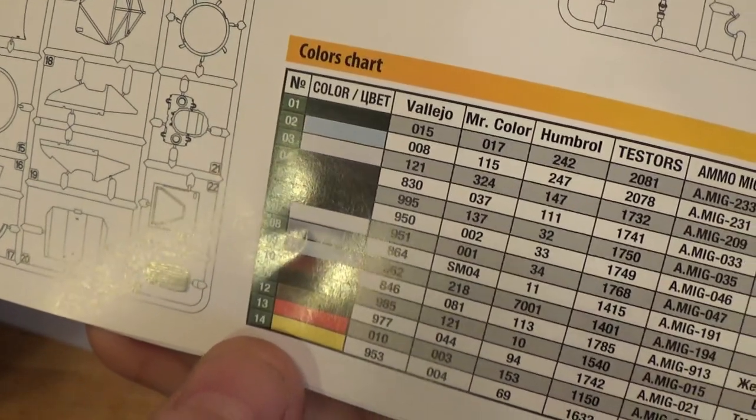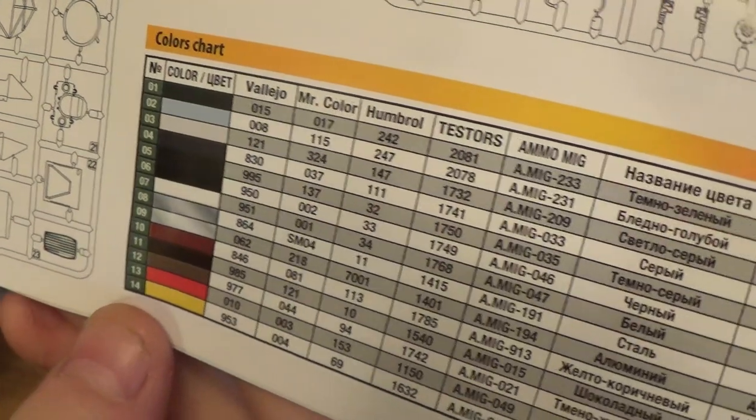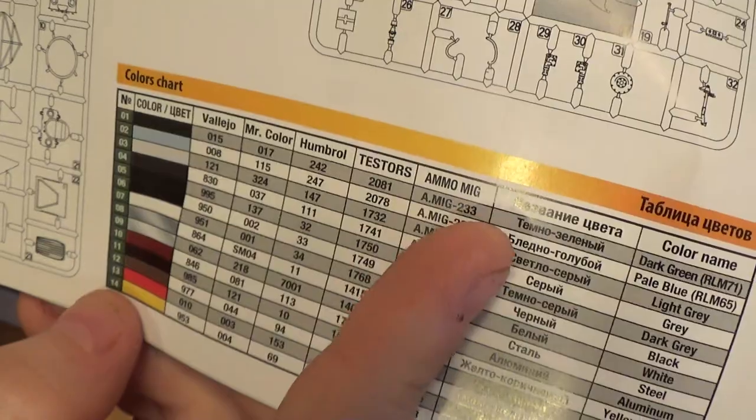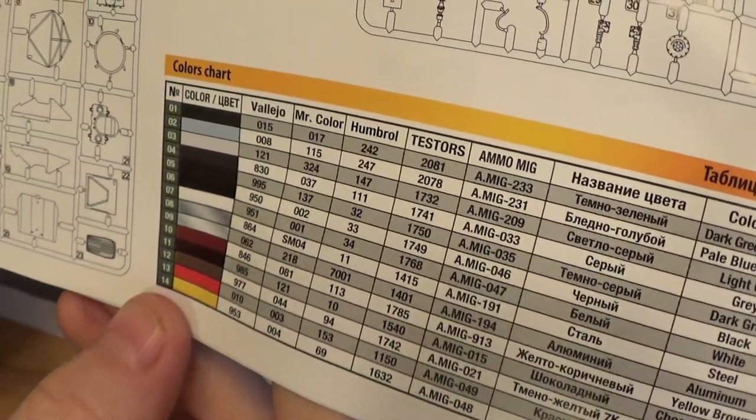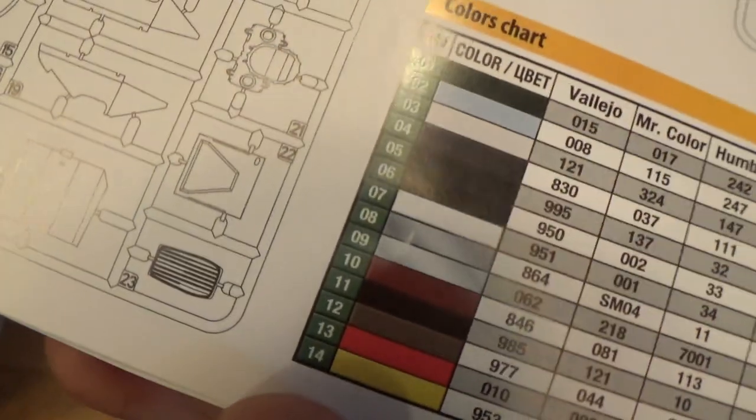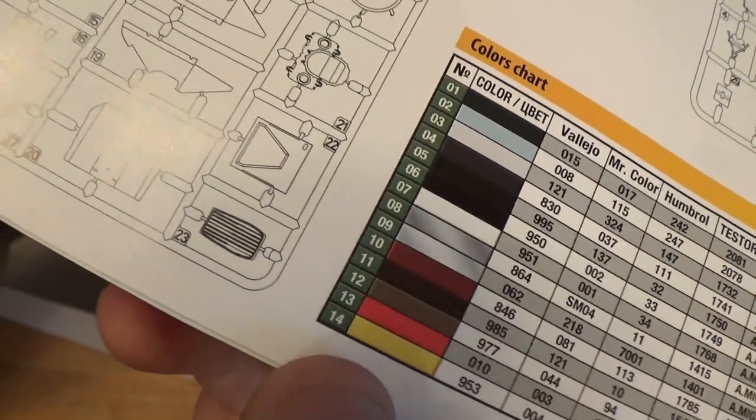And you know what's kind of nice actually? A lot of instructions don't show you what the color is supposed to look like, which is cool. So we've got Vallejo, Mr. Color, Humbrol, Testers, Amovmig. No idea, not a clue. But different options. But it's really cool they show you what it's supposed to be so that you can match it up yourself if you like to use something else.